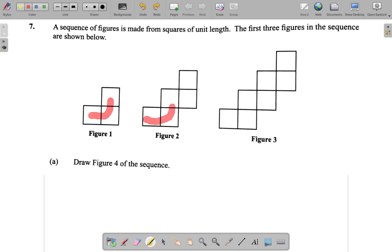Figure 2. You have the same three blocks. But then you have two more blocks added to the right like this. That's figure 2.